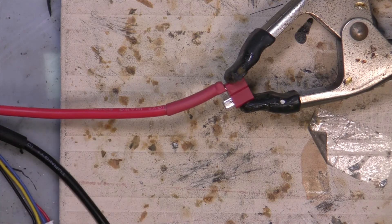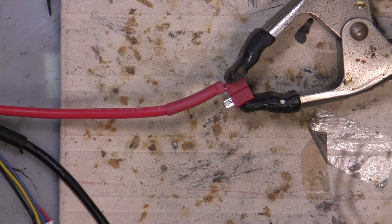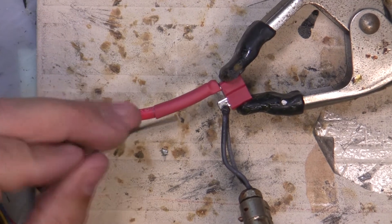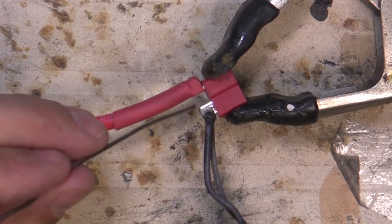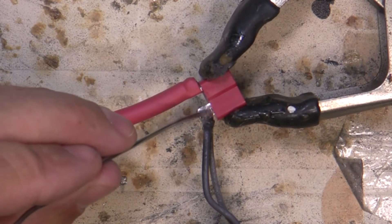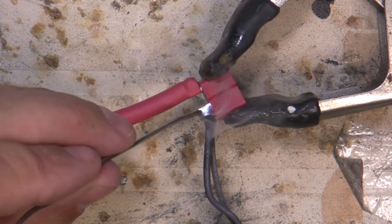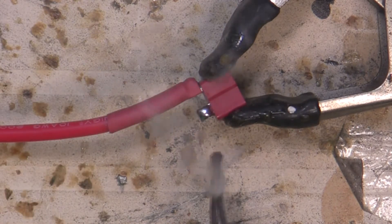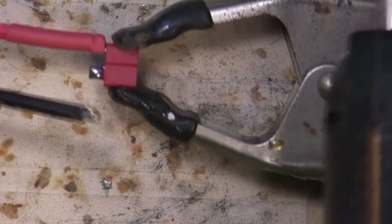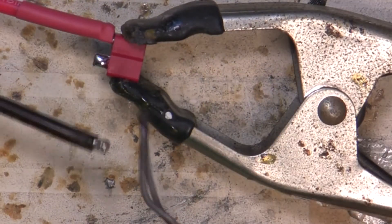Again, we're going to tin this side of the connector. Again, apply heat to the tab and then let the flux and the solder flow over the connector. Get a nice little tab of solder on the connector. Don't put too much or it will overflow to the bottom of the connector.